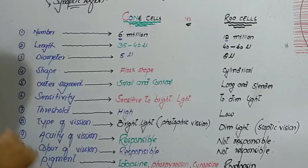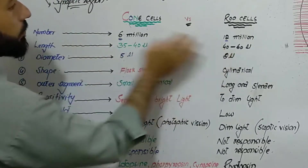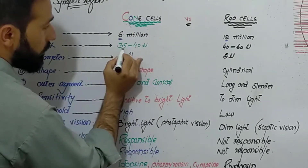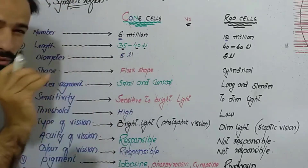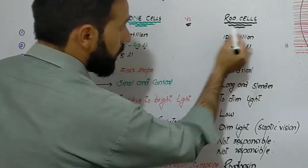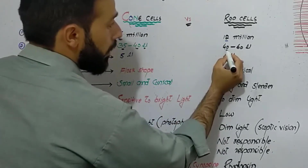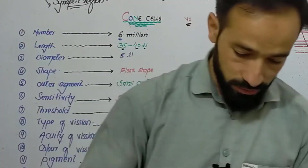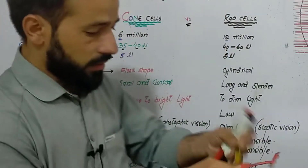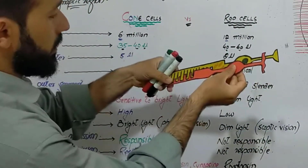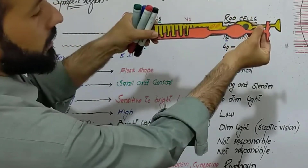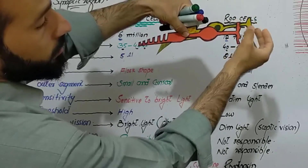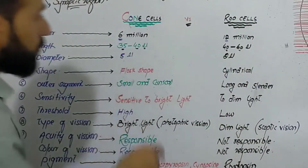The next difference is in the length of rods and cones. The length of cone cells is 35 to 40 micrometers, which is very small, and the length of rod cells is 40 to 60 micrometers. You can see here that rod cells are a little larger than cone cells.